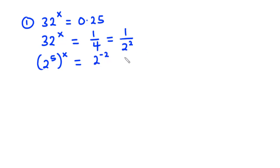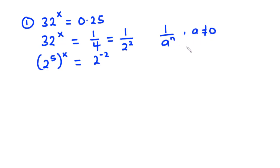Now in indices, there is a property such that whenever you have 1 over a exponent n, where a is not equal to 0, you can express that as a exponent negative n.